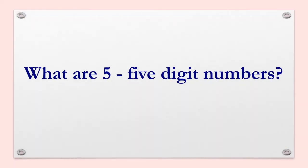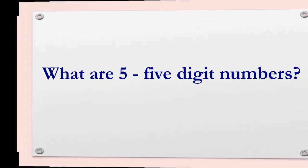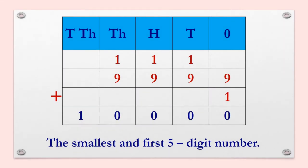Let us begin our lesson today by understanding what are 5-digit numbers. Students, when we add 1 to the biggest 4-digit number 9999, we get the smallest and first 5-digit number 10,000. A 5-digit number is placed in the 1s, 10s, 100s, 1000s and 10,000s columns.